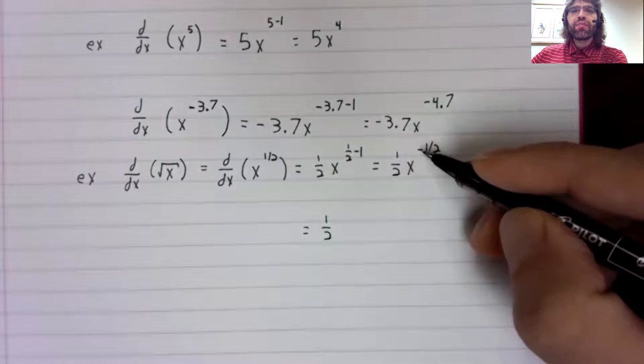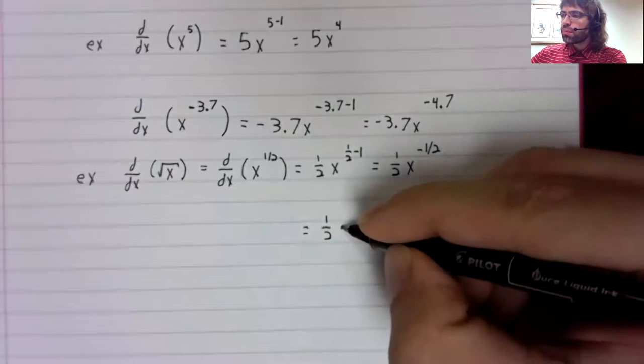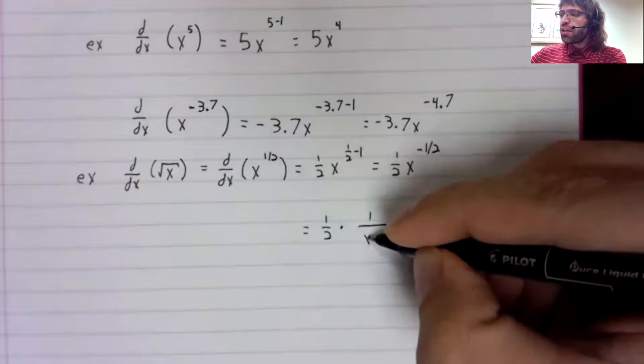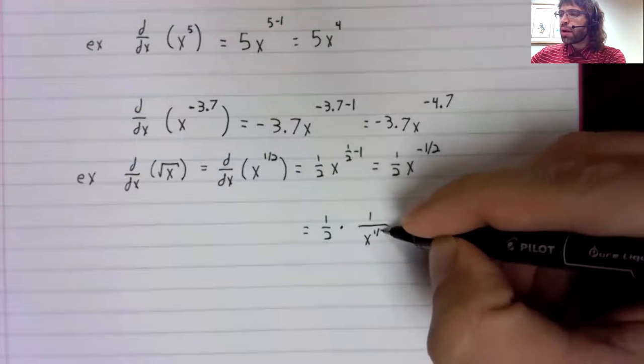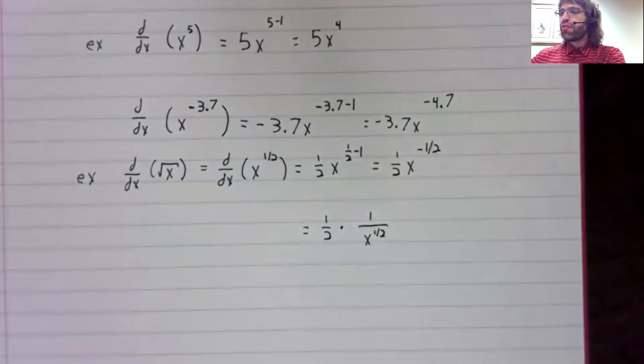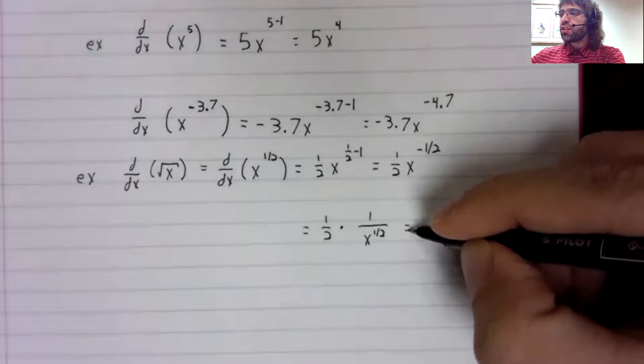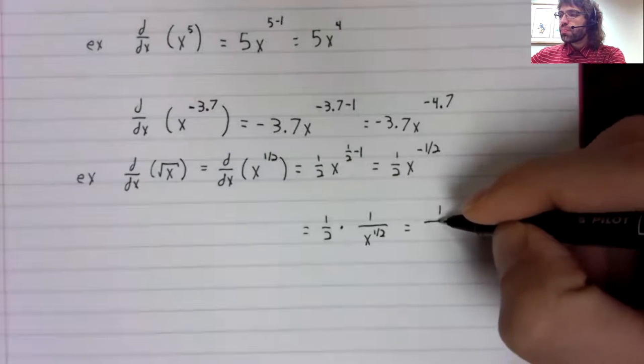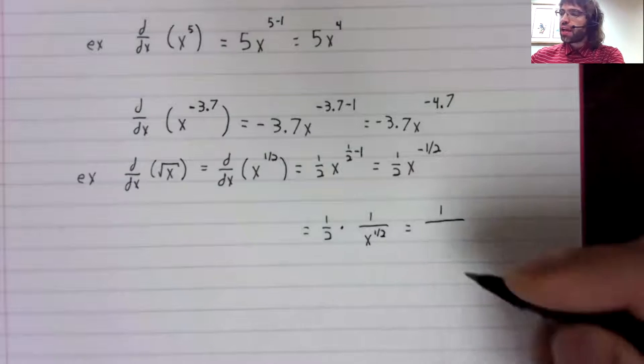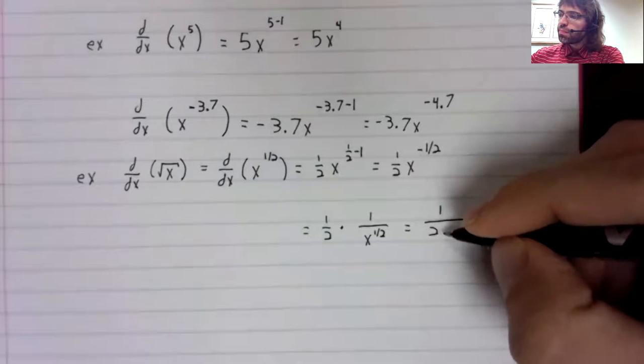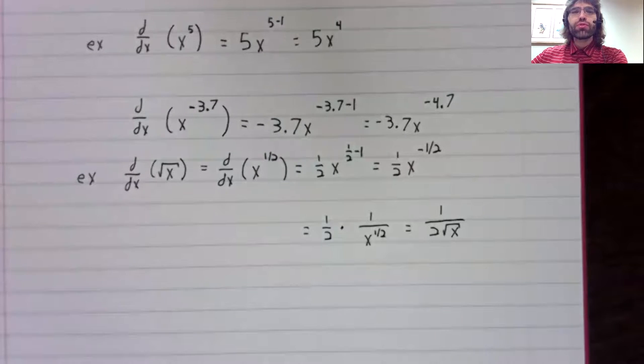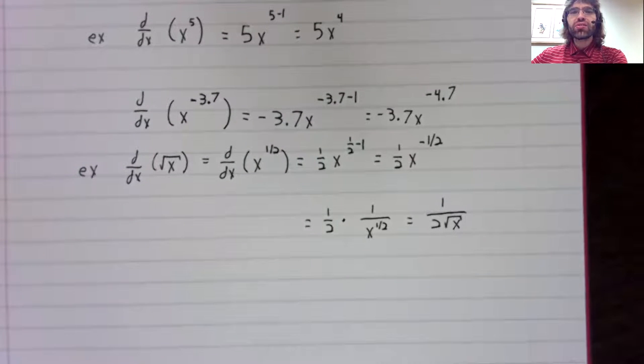Having a negative power is the same as having a positive power in the denominator of a fraction. And then x to the one-half is the square root of x.